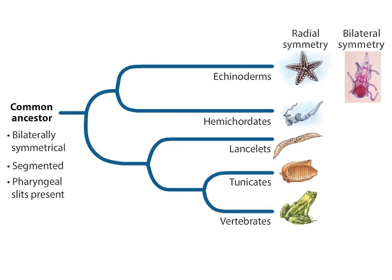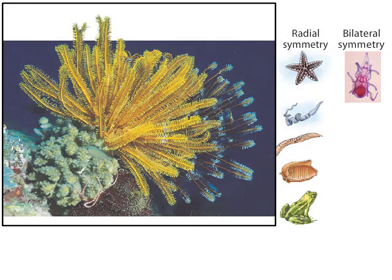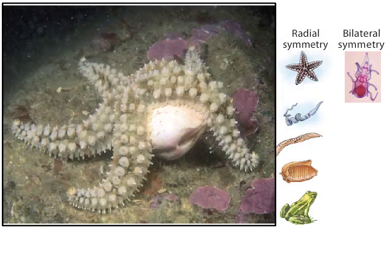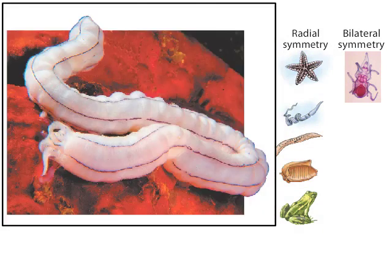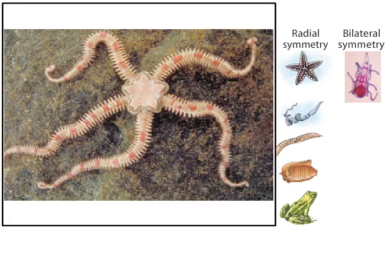Echinoderms undergo a radical change during body development into radially symmetrical animals. Radial symmetry is a derived trait in echinoderms that is absent in the deuterostome common ancestor. Another derived trait of echinoderms is the presence of calcified internal plates, which serve as an internal skeleton. As is typical of animals with radial symmetry, echinoderms have no head, and they move slowly and equally well in many directions. Most echinoderms have an oral side containing the mouth, and an opposite aboral side containing the anus.